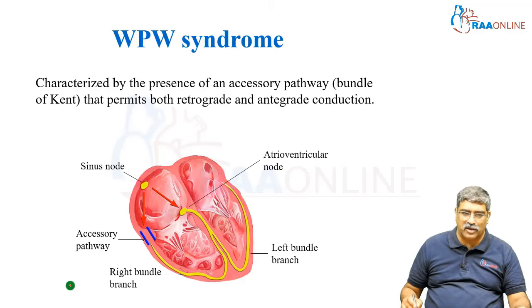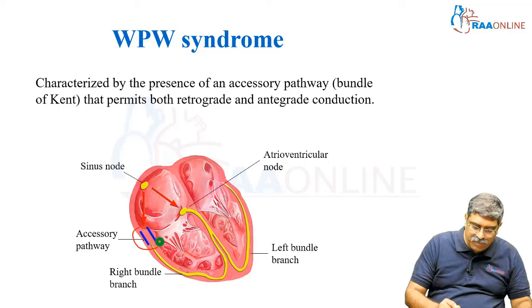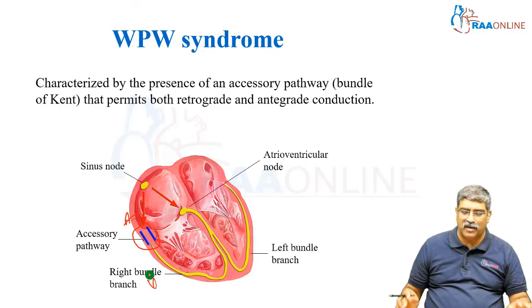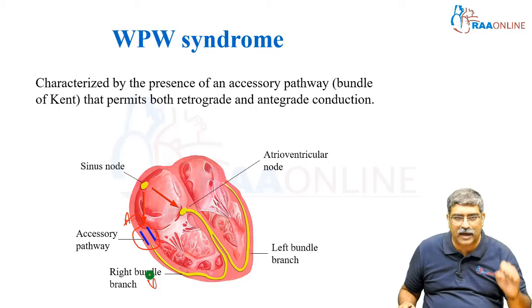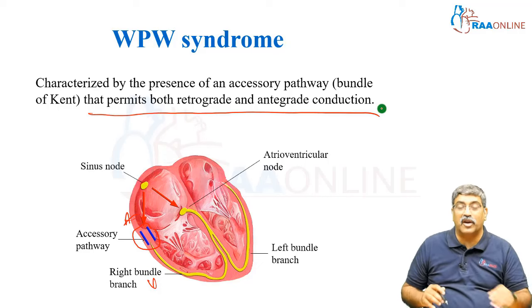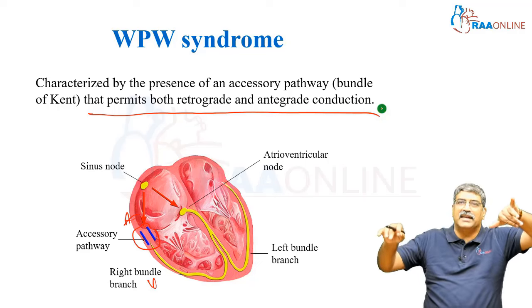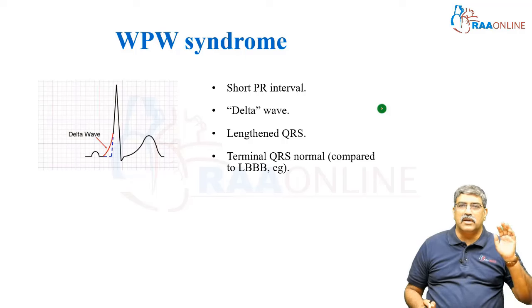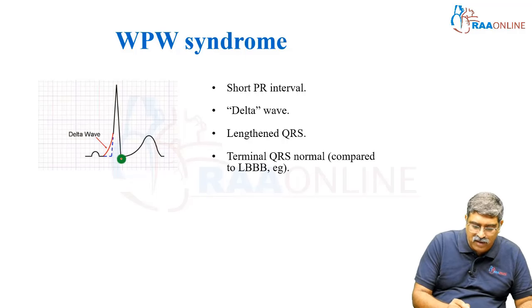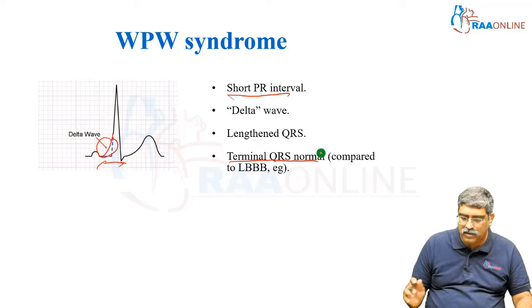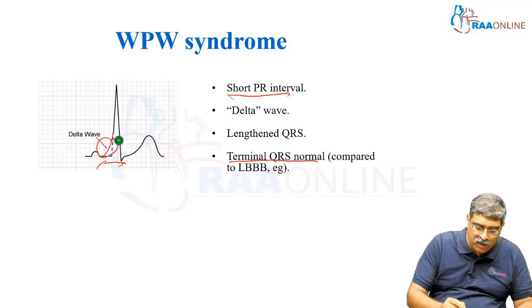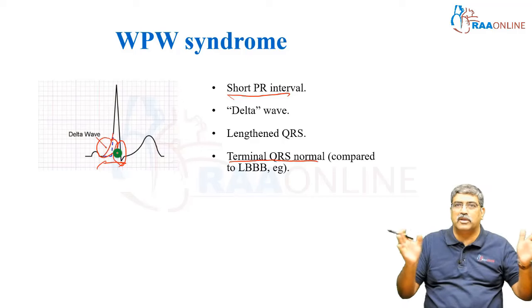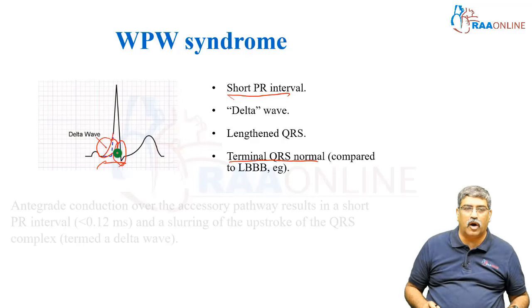What is Wolff-Parkinson-White syndrome? There is an accessory pathway between the atria and the ventricle, which is known as the Kent bundle. This permits both retrograde and antegrade conduction through the accessory pathway. This WPW syndrome is characterized by a short PR interval, a delta wave, and the QRS is prolonged, although the terminal QRS is normal.